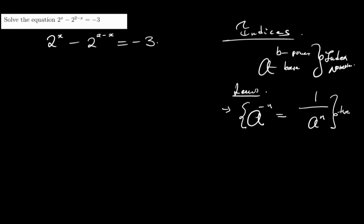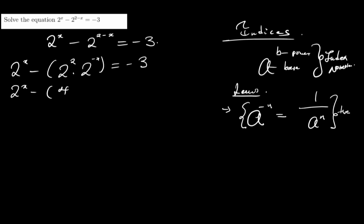With these in mind, let us try to see how we can approach the question. I have 2 to the x minus — I can open a bracket and say this is 2 to the power 2 times 2 to the minus x — and all of this is equal to negative 3. Having negative indices won't satisfy my need, so I have to make the negative index positive. 2 to the power 2 can be simplified to 4, and then I have 4 times 1 over 2 to the x, and this is equal to negative 3.